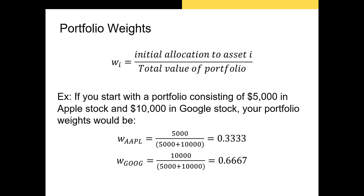For example, let's say you start with a portfolio of $5,000 in Apple stock and $10,000 in Google stock. Your portfolio weights would be: $5,000 divided by $15,000 total, giving Apple a weight of 0.33 — basically a third — and Google would be the remainder, two-thirds.